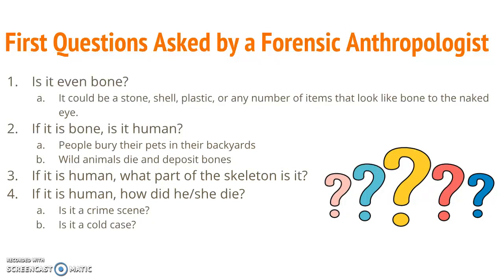If it is a human bone, what part of the skeleton is it? Is it a flat bone like in the skull, a long bone like the femur, or short bones like the wrist? And if it is human and you figure out what part of the skeleton it belongs to, how did that person die? Did they die naturally, is it a crime scene, or is it a cold case you just stumbled across?